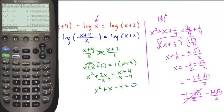And if I put it in decimal form, I get negative 1 plus the square root of 17. I'll put that in decimal form here and divide by 2. And I get my answer, 1.562.